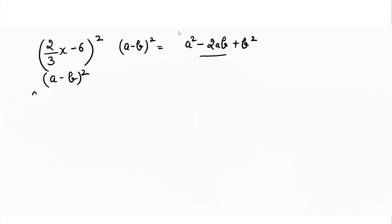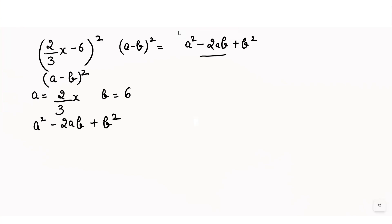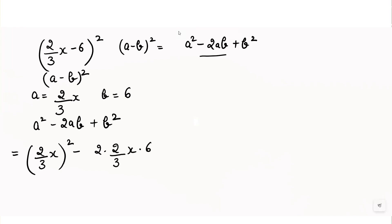Comparing with this formula, the value of a is equal to 2/3x and the value of b is equal to 6. We substitute into the formula a squared minus 2ab plus b squared, writing (2/3x) whole square minus 2 times (2/3x) times 6 plus (6) whole square.